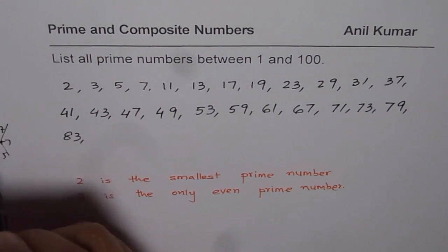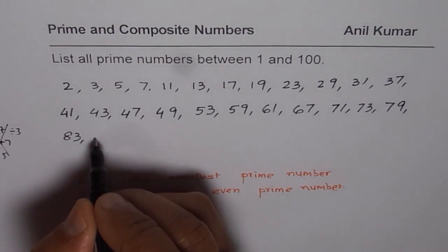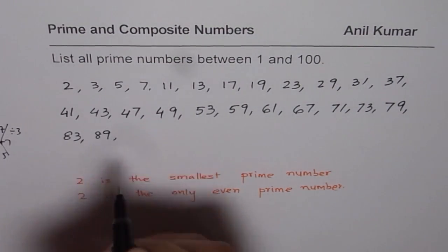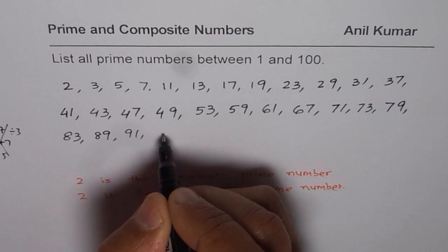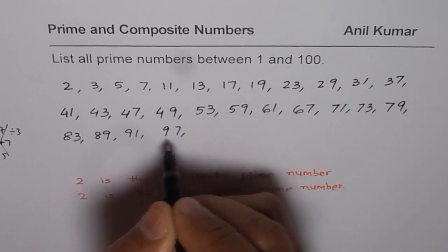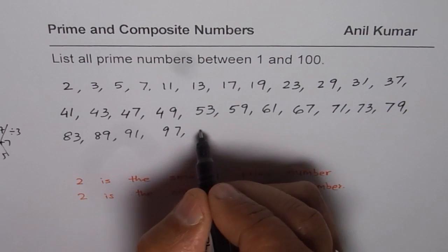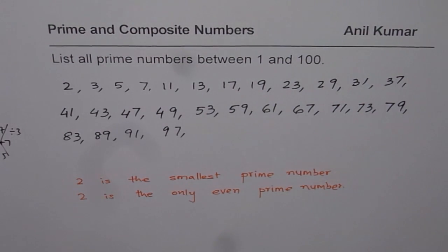87, 88, 89 - 89 is okay. 90, 91, 92, and then we have 93 can be divided by 3. 94 is even. 95 is divided by 5. 96 is even. 97, 7 plus 9, so it goes okay. 98, 99, and 100. So these numbers seem to be the prime numbers.